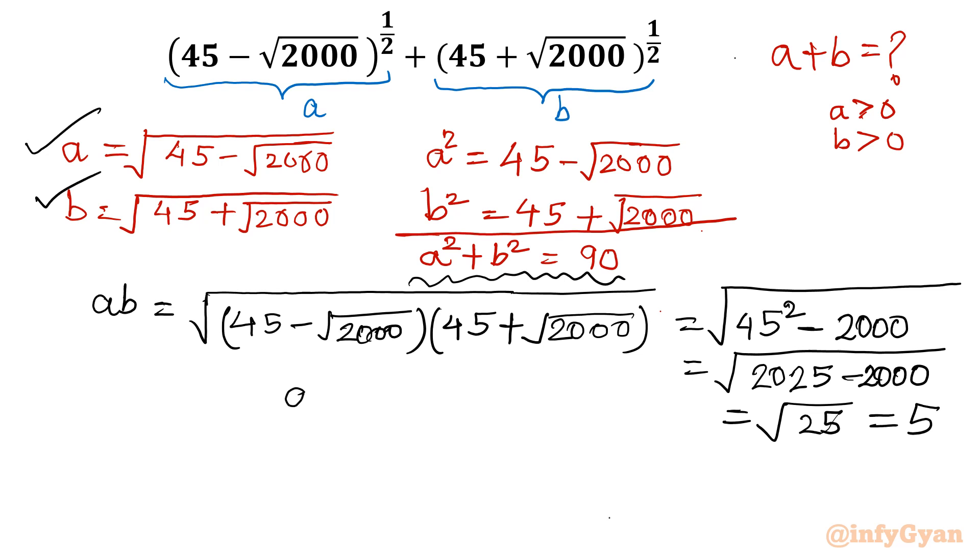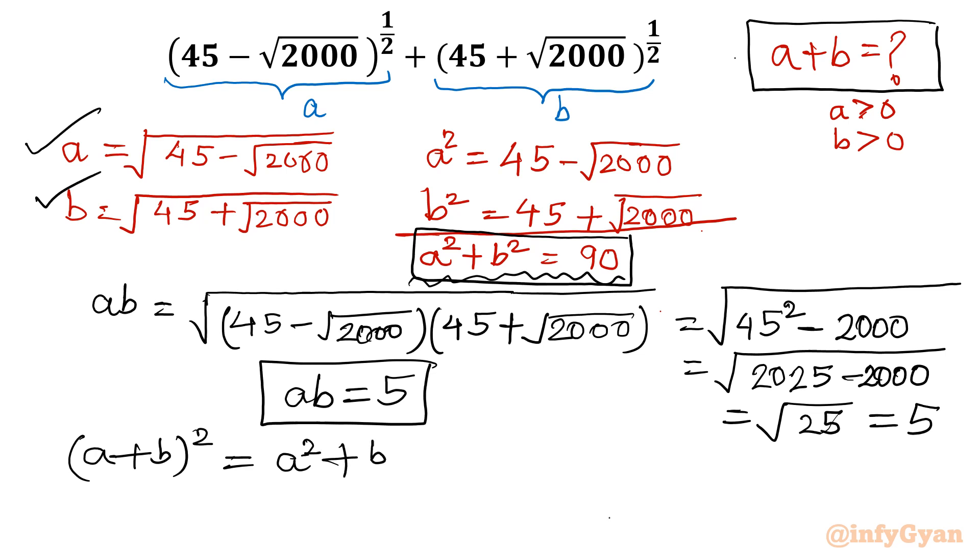Now ab is 5, task is done. ab is 5, a² + b² is 90. We have to find out a + b. I am going to write (a+b)² identity: a² + b² + 2ab. Now everything is known: a² + b² is 90, I will write 2ab is 5, so this is 90 plus 10 = 100. So a + b, because a is positive and b is positive, a + b will come out 10 by taking square root both sides. We have 100 is 10², so you can write a + b = 10. So we will write our answer as 10.